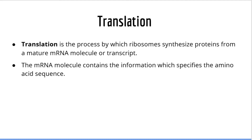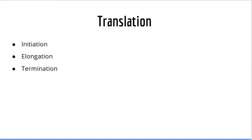This sounds very complex and daunting, however you only need to know the general function of all of these molecules. You do not need to be familiar with the specific details. Just like transcription, translation can be broken down into three steps: initiation, elongation, and termination. We will talk more about these steps on the next video. For now, just know that there are three major steps in translation named just like in transcription.